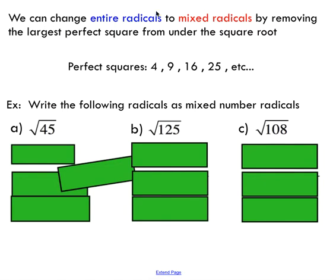We can change entire radicals to mixed radicals by moving the largest perfect square from underneath the square root sign. Just a little bit of review about perfect squares — these are numbers that, when square rooted, give you a nice whole number. So for instance, if you take the square root of any of these, you end up with 2, 3, 4, 5, etc. So if you just take 2, 3, 4, 5, and so on, and square those numbers, you'll end up with a perfect square.